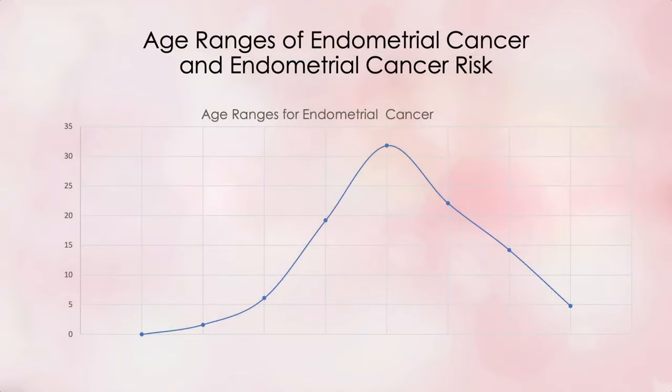But if we plot the age distribution of both actual endometrial cancer cases and your actual risk of ever getting endometrial uterine cancer, it would look like this. Imagine ages ranging from 20 to 80 across the horizontal lower x-axis. The age distribution for both actual cases and for your risk of getting endometrial uterine cancer is really a bell-shaped curve.